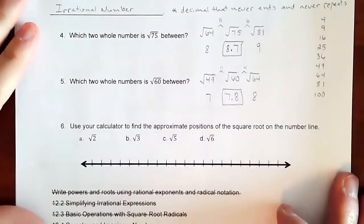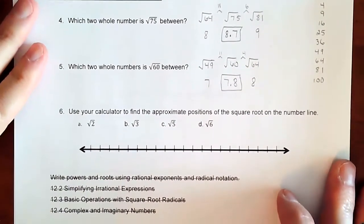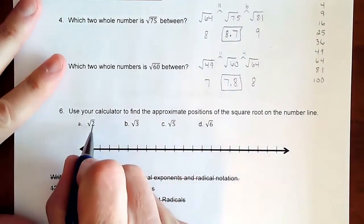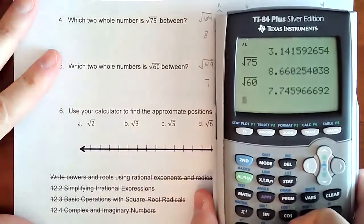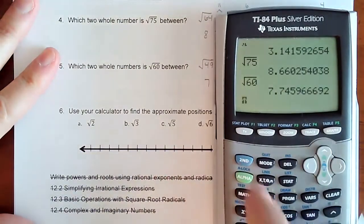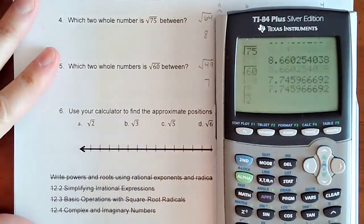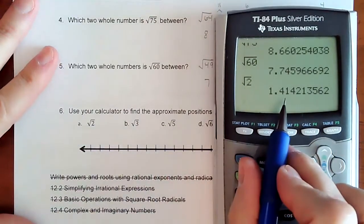And then the last thing on this is how do we put these things on a number line? You got square root of 2, square root of 6. To be honest, we're going to make them into decimals. So we're going to do square root of 2. And I'm going to go out two decimals on every one of these things.